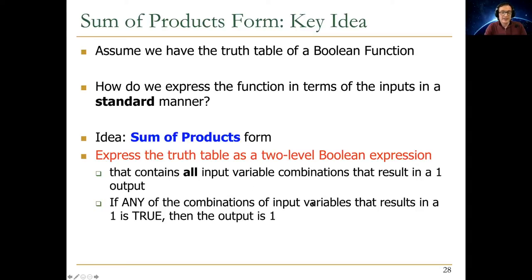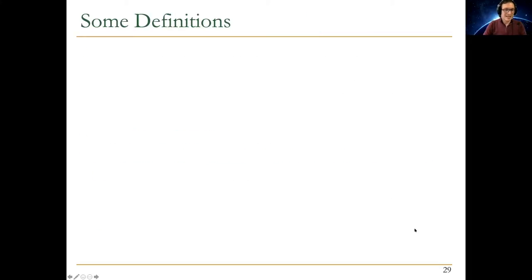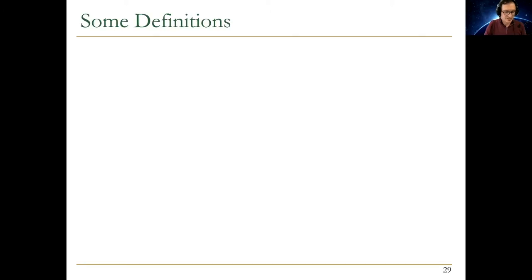The idea of sum of products is to express the truth table as a two-level boolean expression where the expression contains all input variable combinations that result in a one output. If any of the combinations of input variables results in a one, the output is one. We enumerate all such combinations. Once you formalize this, you can build tools that automatically apply boolean algebra laws and simplification heuristics to simplify the canonical form. This is really the basis of computer-aided design tools — also called logic synthesis tools.